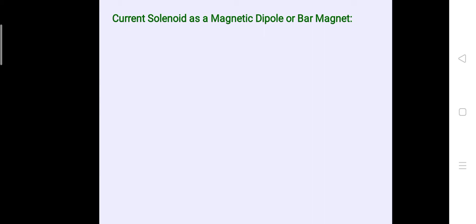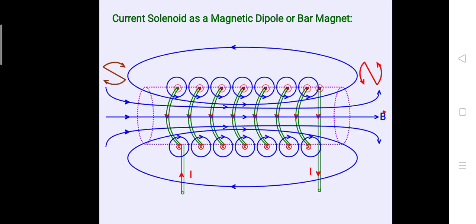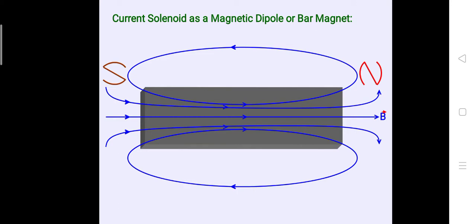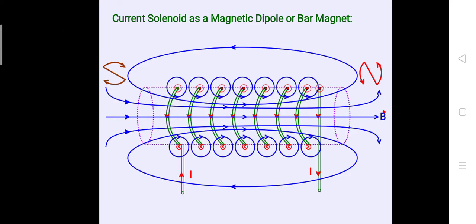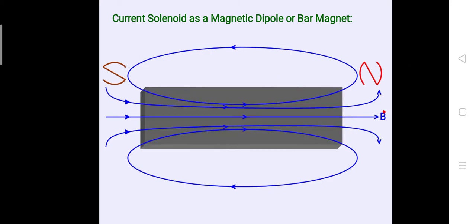Current solenoid as a magnetic dipole or bar magnet. This solenoid produces a magnetic field. The left side of the solenoid behaves as the south pole, as magnetic field lines are entering from this side. The right side behaves as the north pole, as magnetic field lines are coming out from this side. This is quite similar to the magnetic field produced by a bar magnet. The magnetic field lines are similar for both cases — only the solenoid is replaced by the bar magnet.